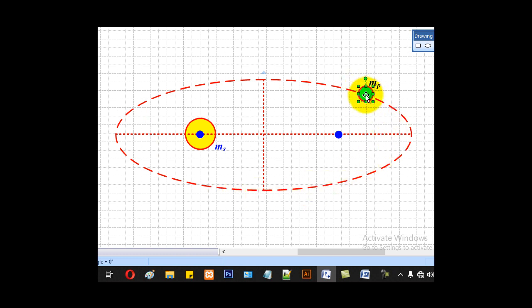For example, if this is one of the planets, it will revolve around that orbit in this direction. That is how planets revolve with the sun as the focus. That is the first law.